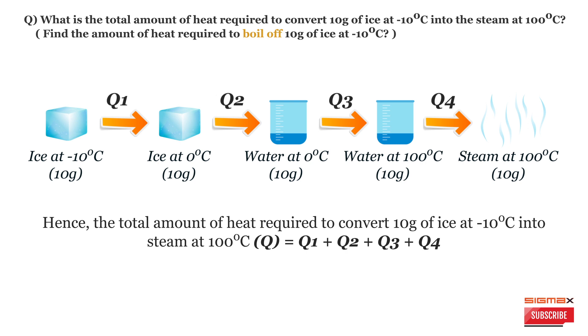Hence, the total amount of heat required Q equals Q1 plus Q2 plus Q3 plus Q4. That means if we find the values of Q1, Q2, Q3, and Q4, we can easily find the total amount of heat.